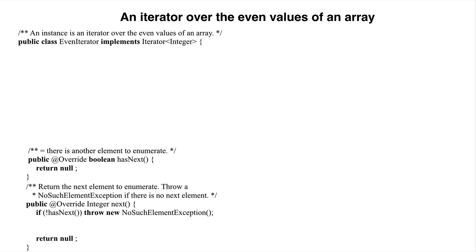The next step is to write the constructor. It should have as parameter the array whose even values are to be enumerated. We declare a field to contain the array and start the constructor.